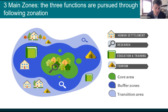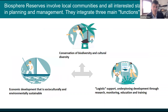The buffer zone surrounds these core areas and is used for ecologically sustainable practices — we're talking about research, education, training, and monitoring. Finally, the transition area, which is the lightest area in red-blue on the screen, is where communities foster economic activities that are socially, culturally, and ecologically sustainable. This is where most of the economic activities take place within biosphere reserves.